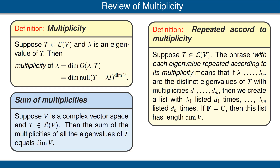Now I want to define the phrase 'repeated according to multiplicity.' Suppose T is an operator on V. If lambda 1 through lambda m are the distinct eigenvalues of T with multiplicities d1 through d_m, then we create a list with lambda 1 listed d1 times, lambda 2 listed d2 times, up through lambda m listed d_m times. For a complex vector space, this list has length equal to the dimension of V.